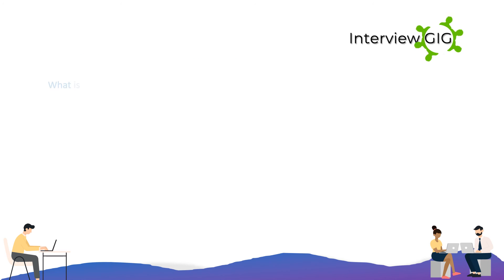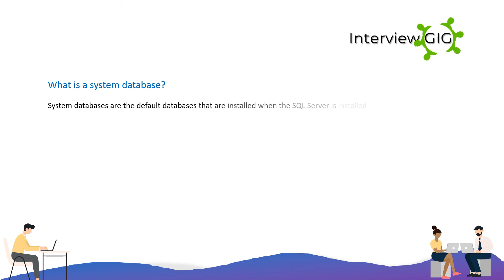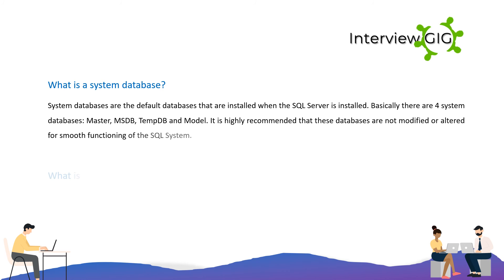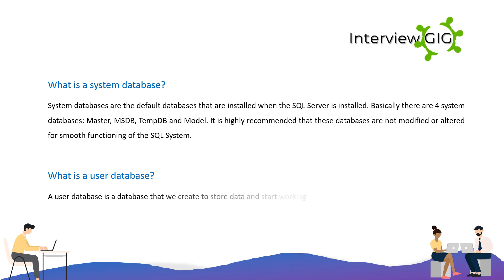System databases are the default databases installed with SQL Server. There are four system databases: master, msdb, tempdb, and model. It is highly recommended these databases are not modified or altered for smooth functioning of the SQL system. A user database is a database that we create to store data and work with it.